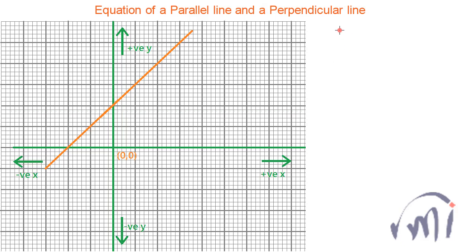In the last video we learned that the equation of a line is y = mx + c, where m is equal to tan theta, where theta is the angle, and c is the intercept on the y-axis.